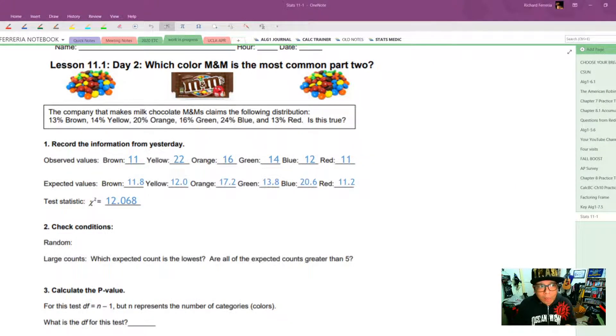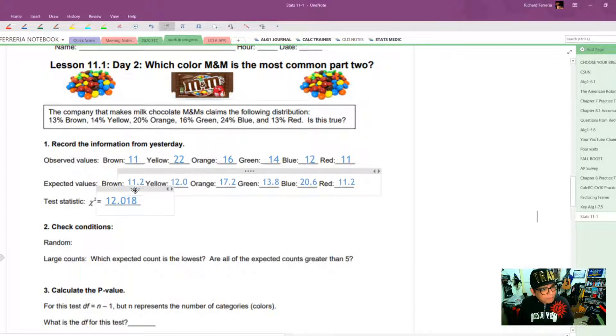Today we're going to try to formalize the process, the four-step plan here for a chi-square test of goodness of fit. So we're going to just take a look at the values from yesterday. Our observed values were 11, 22, 16, 14, 12, and 11. Now if you were watching yesterday's video, you probably noticed that I got one of these values wrong. I think I just typed it incorrectly, but this 11.2 for Brown should have been there.